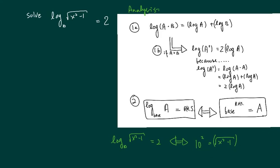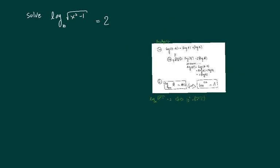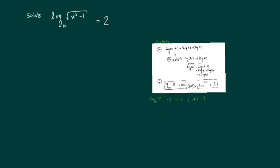So let's write up the solution. Here's the solution: log base 10 of square root of x squared minus 1 equals 2. We're going to use the property discussed earlier. We hold onto the base and swap whatever we're taking log of with the right hand side. I end up with 10 squared equals the square root of x squared minus 1.